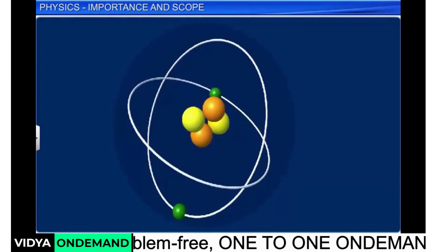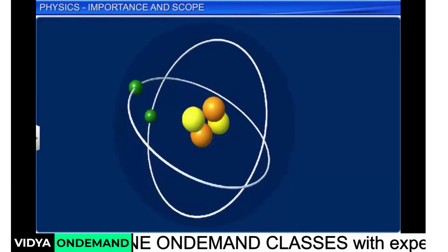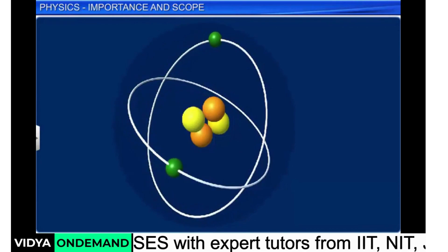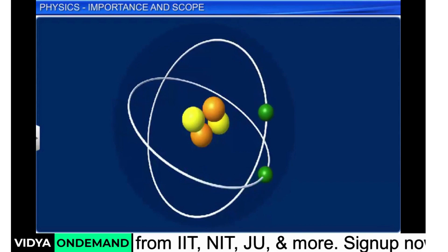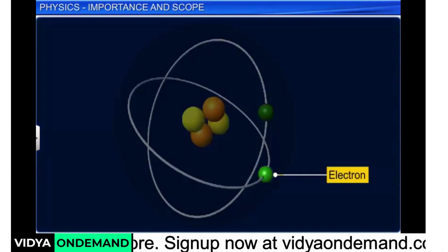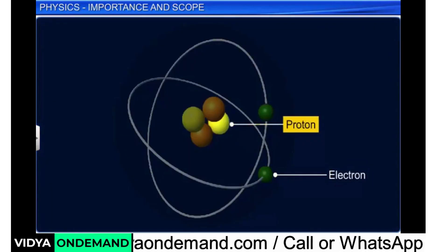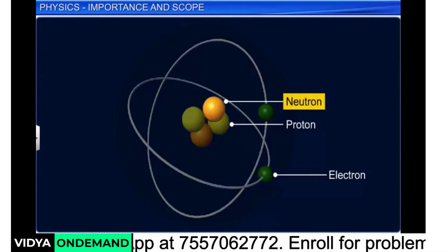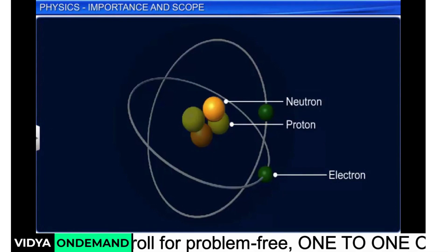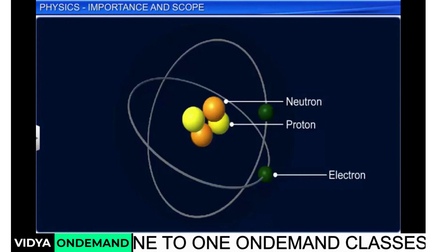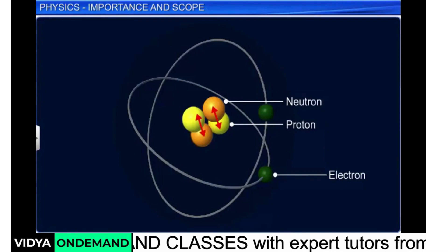An atom consists of three subatomic particles, namely electron, proton and neutron. The force that binds protons and neutrons is the strong nuclear force.